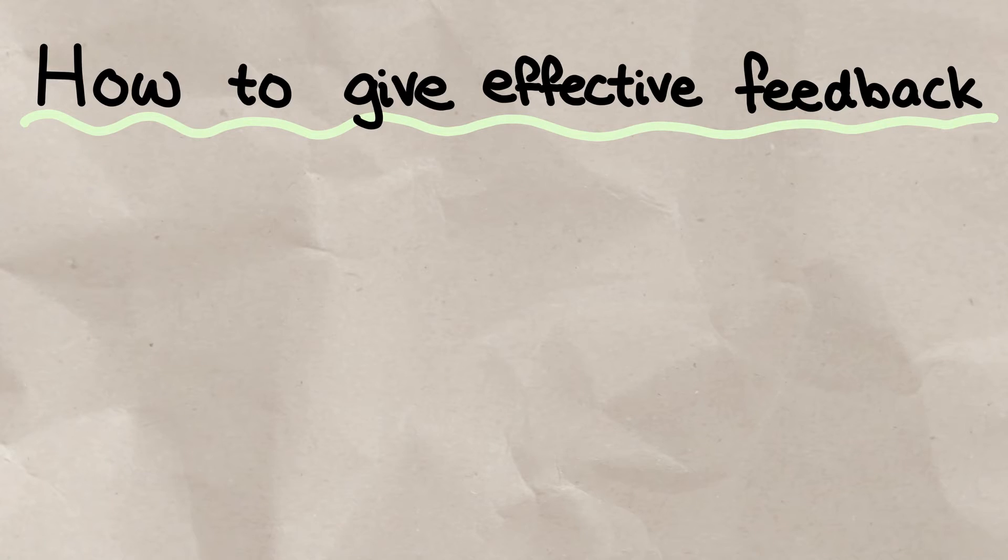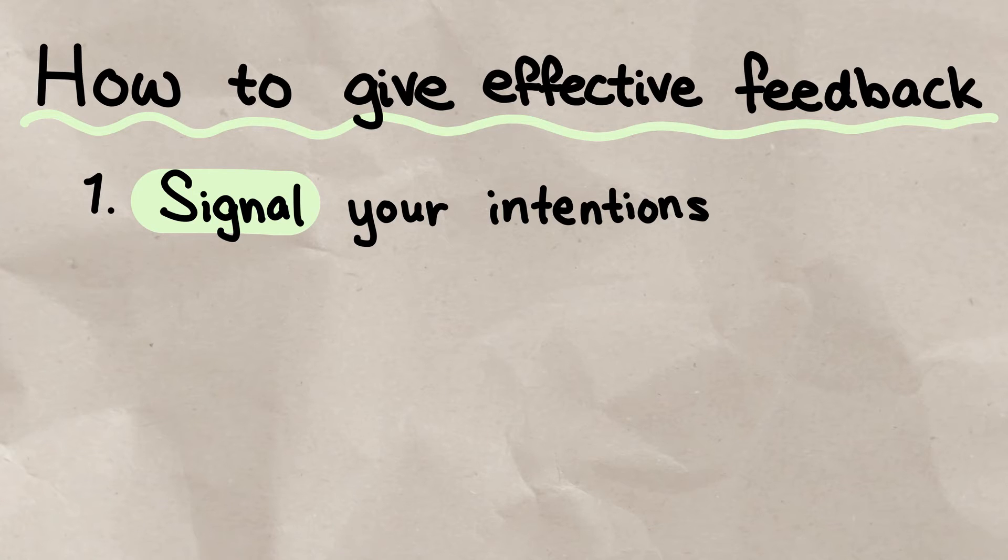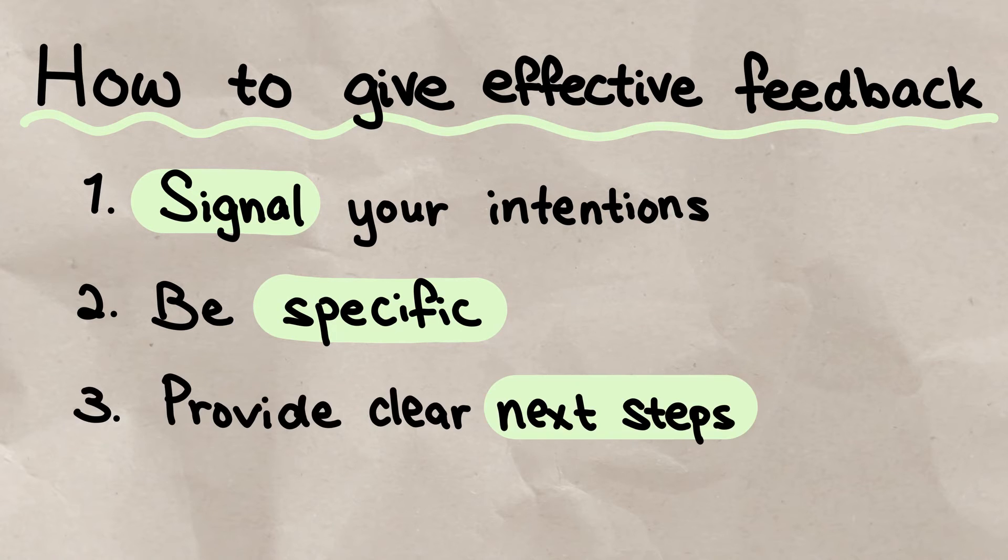So, how can we provide effective feedback? By considering the recipient's perspective and role, we can signal our intentions, that we take them seriously and genuinely believe they can improve. We can be specific about what went well and what did not go as well instead of focusing only on what's wrong, and we can provide a clear next step for them to take.